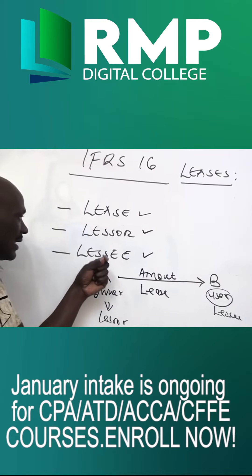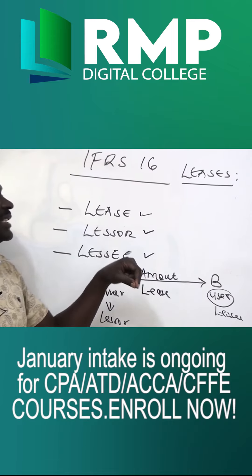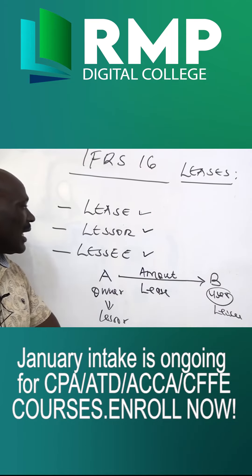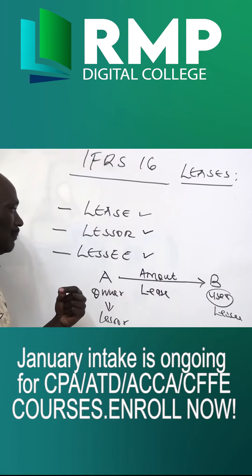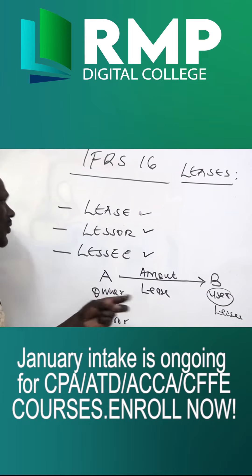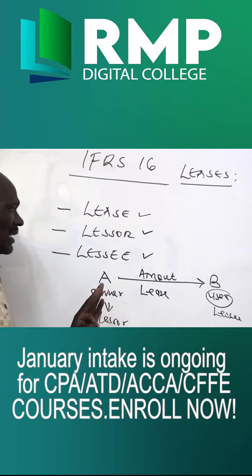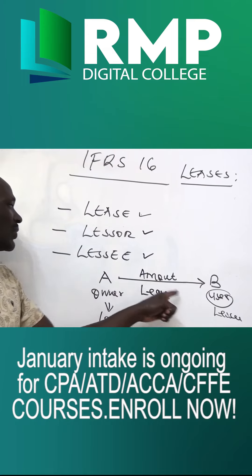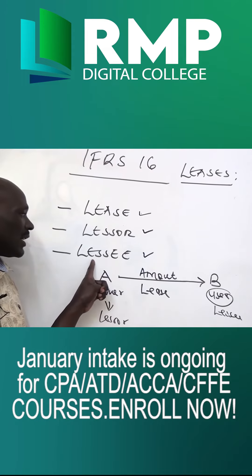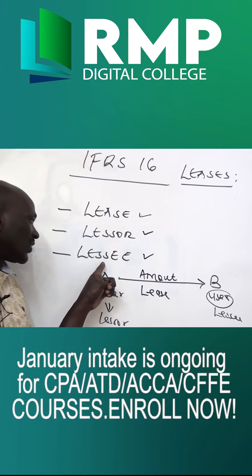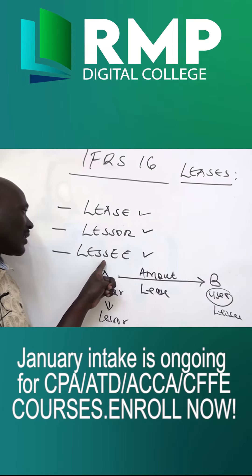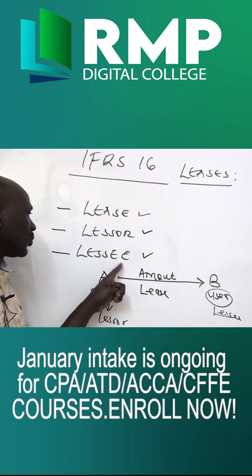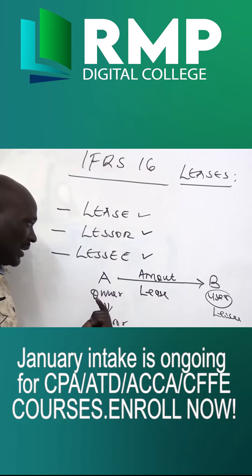The person who is giving out the asset has got an investment which is given to another party. The other one who is using the asset is doing so for their own business. We want to look at how this person records in their books the transaction and the contract between the two parties.